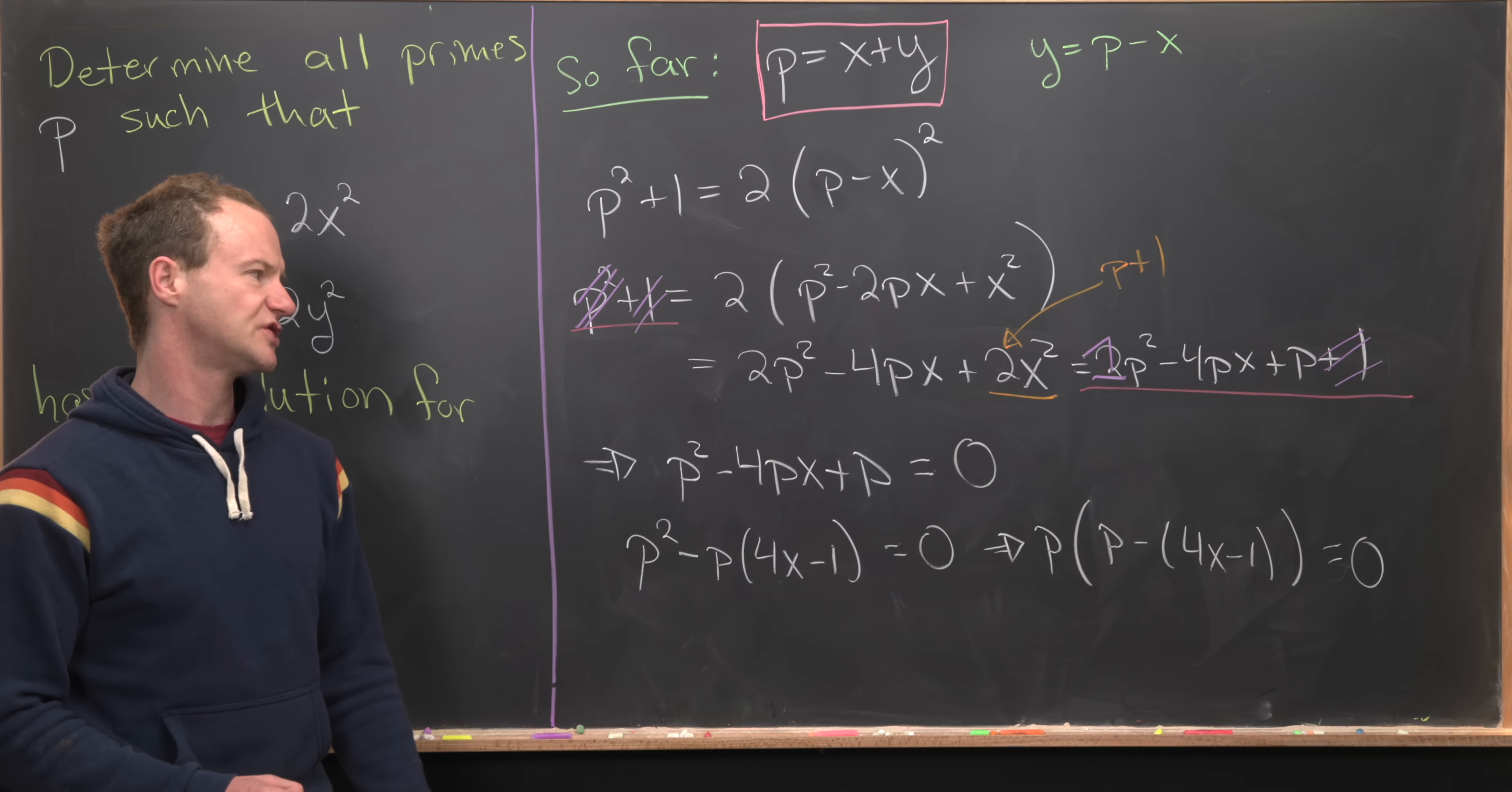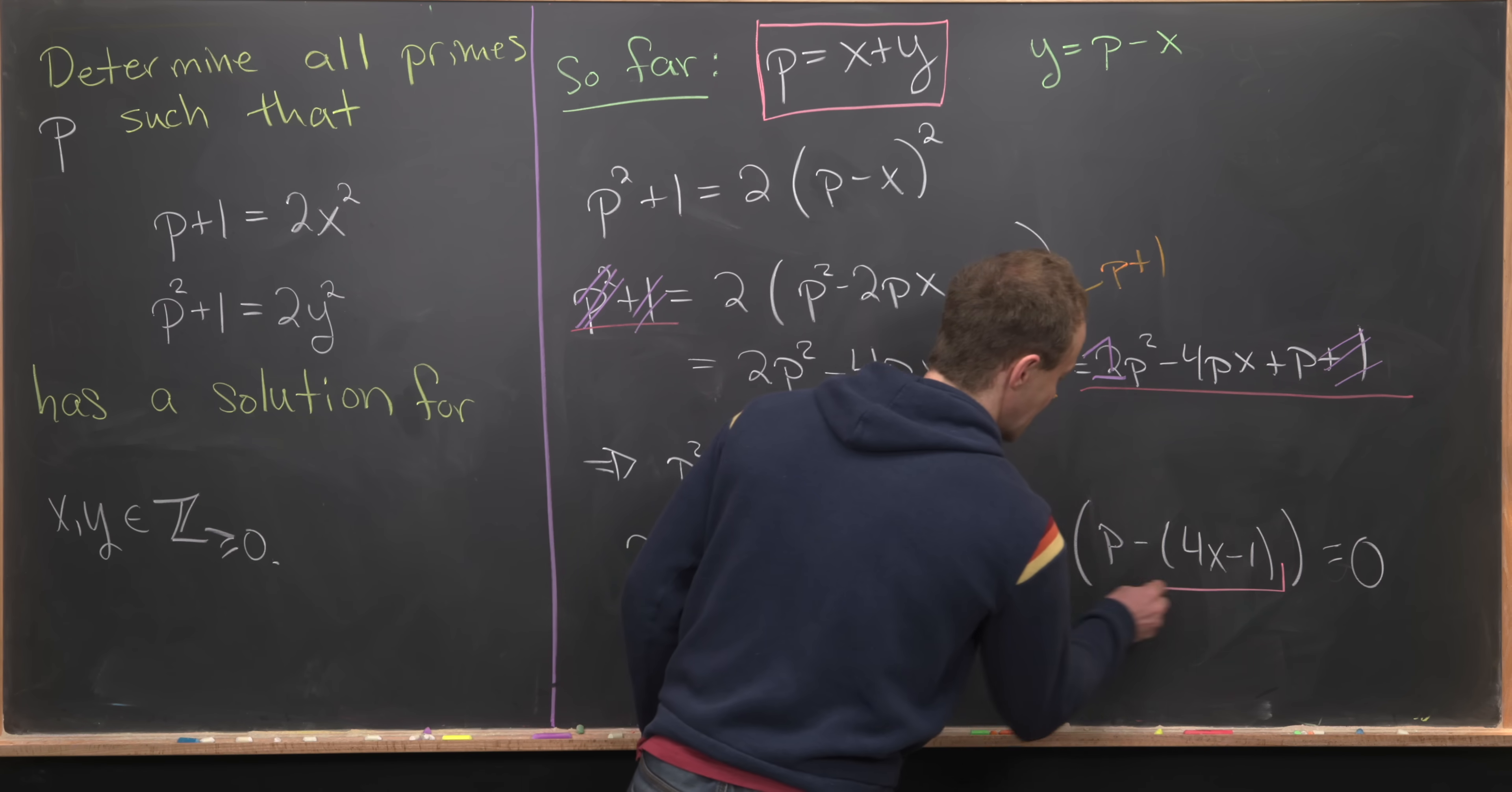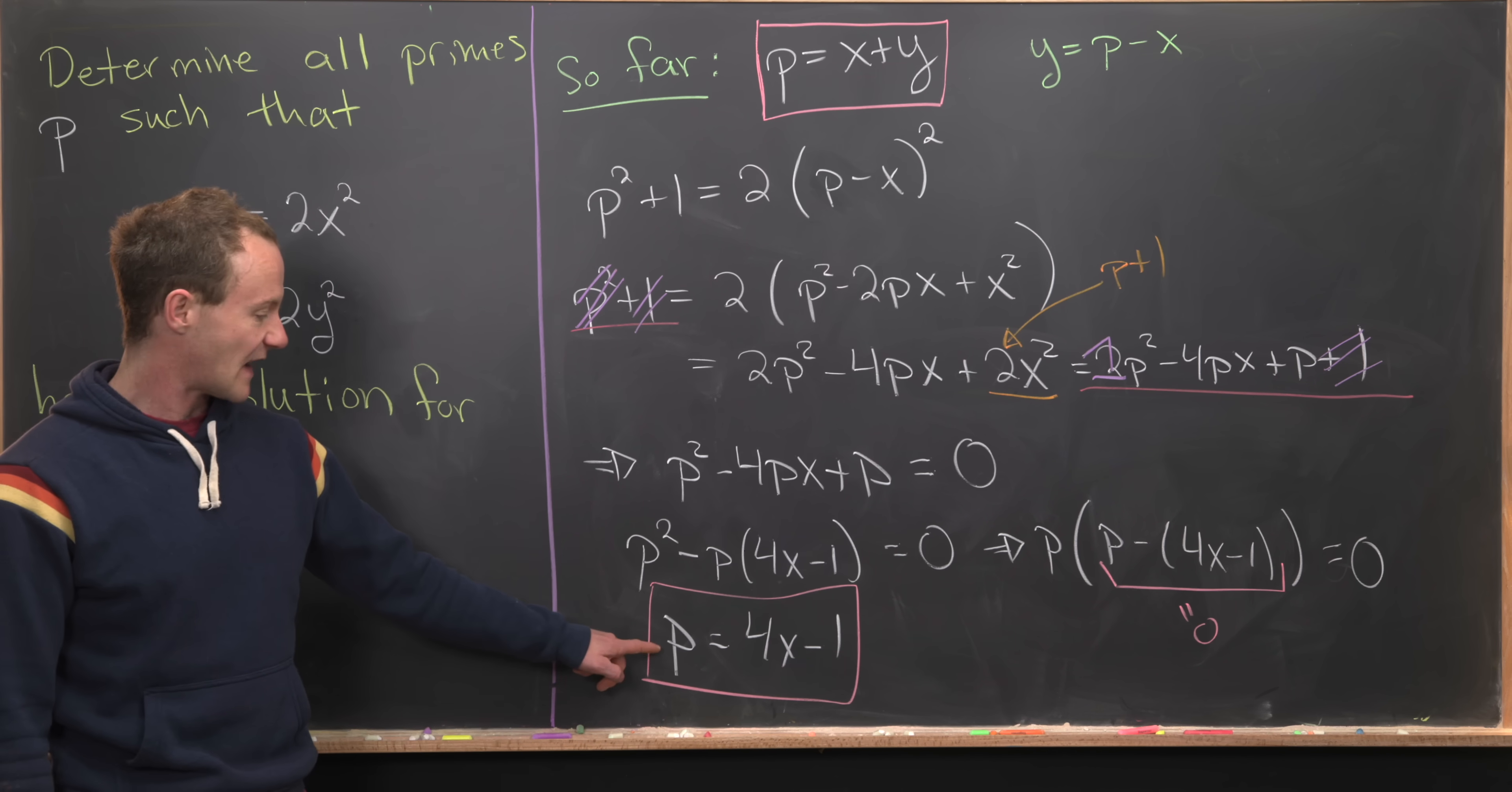That tells us p equals 0, which is clearly not true because 0 is not prime, or we have p equals 4x−1. So now we've got this fact that p has to equal 4x−1.